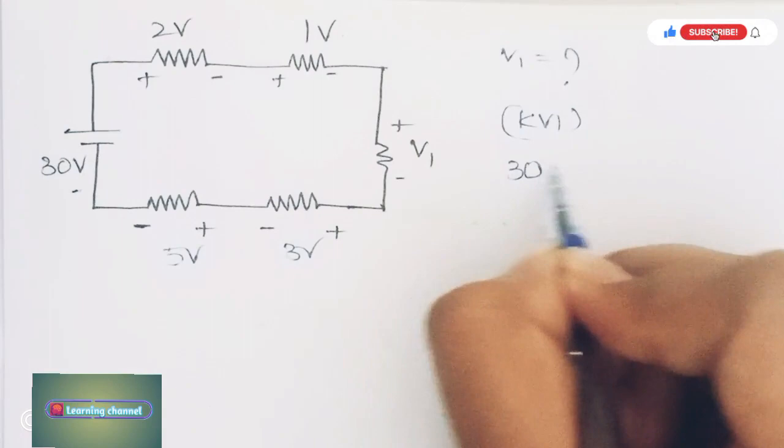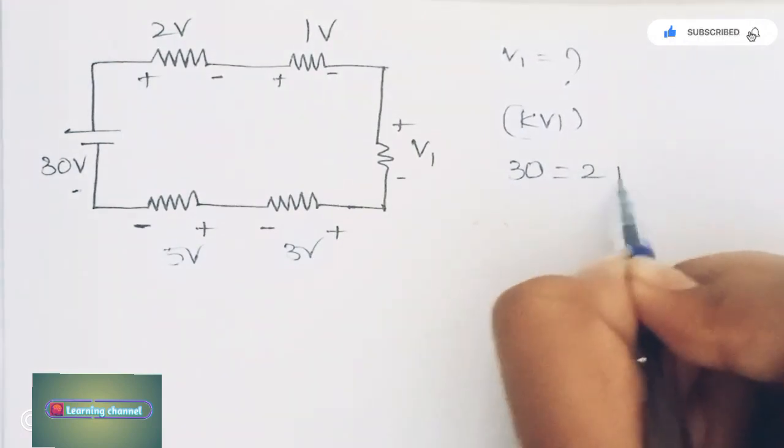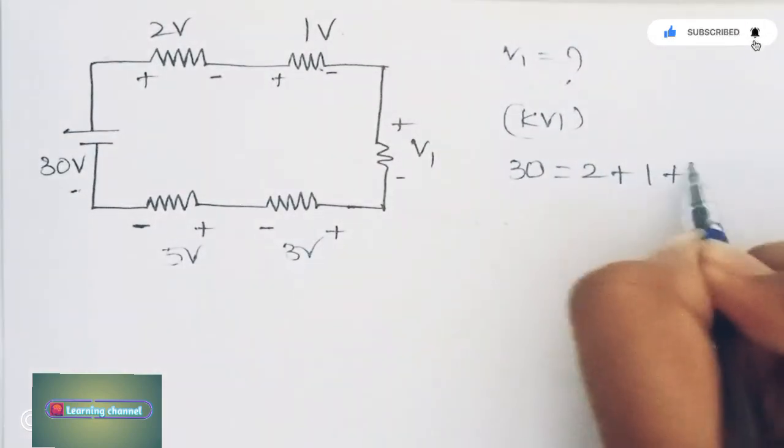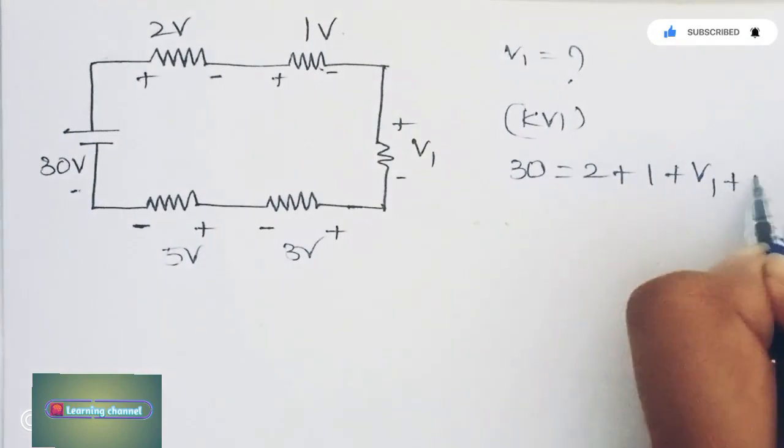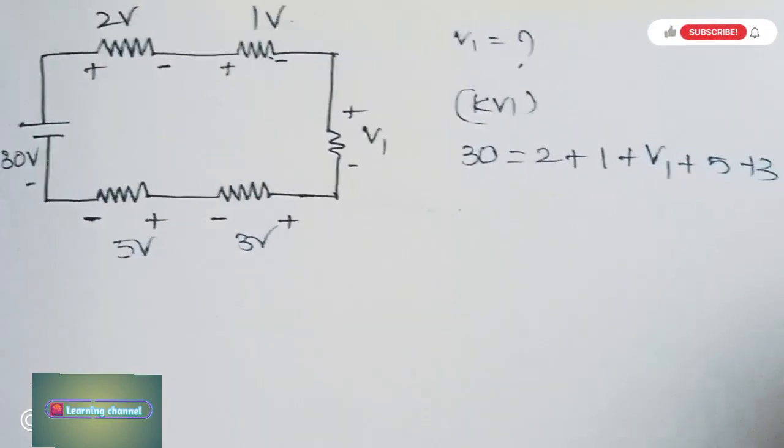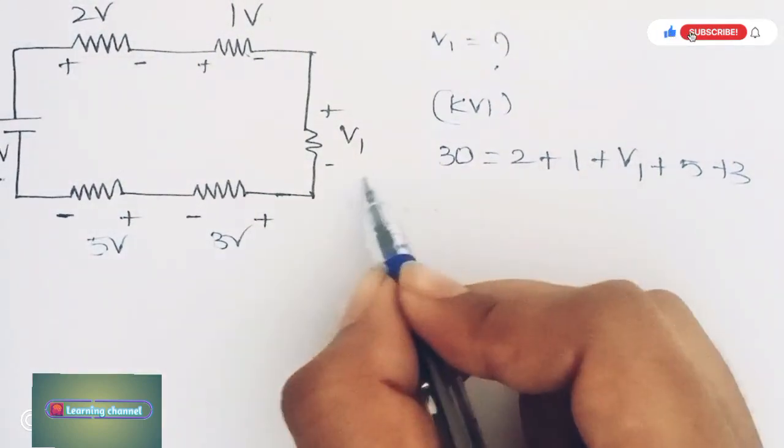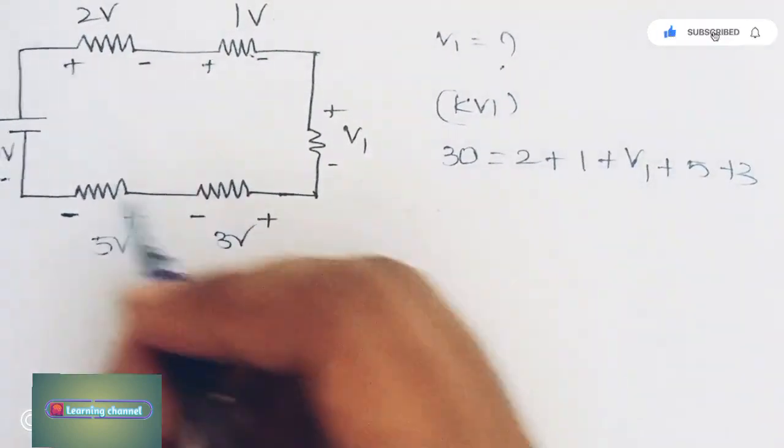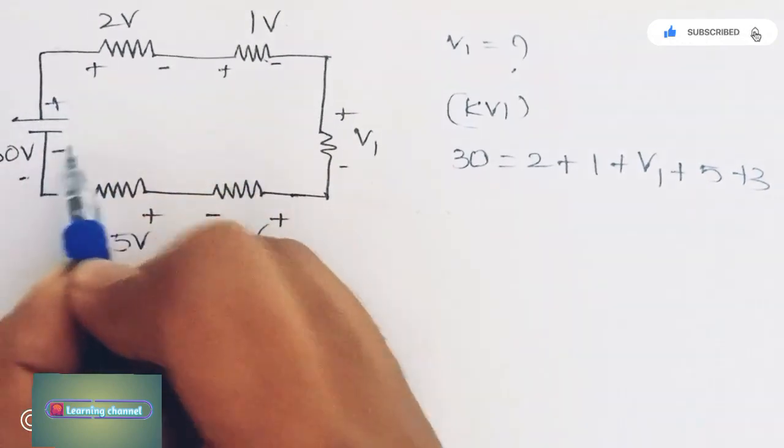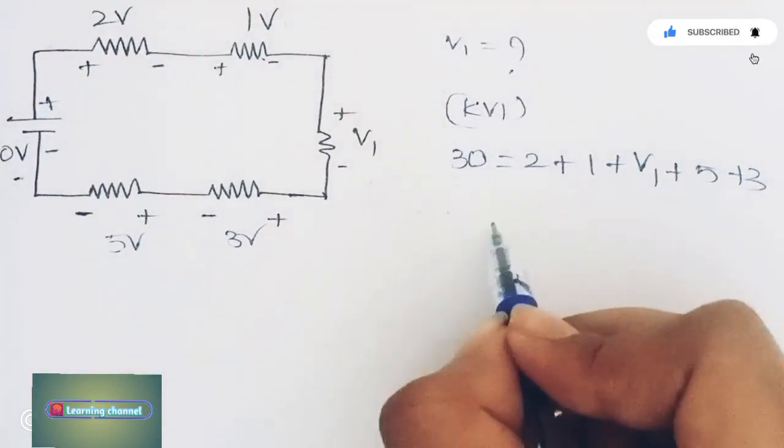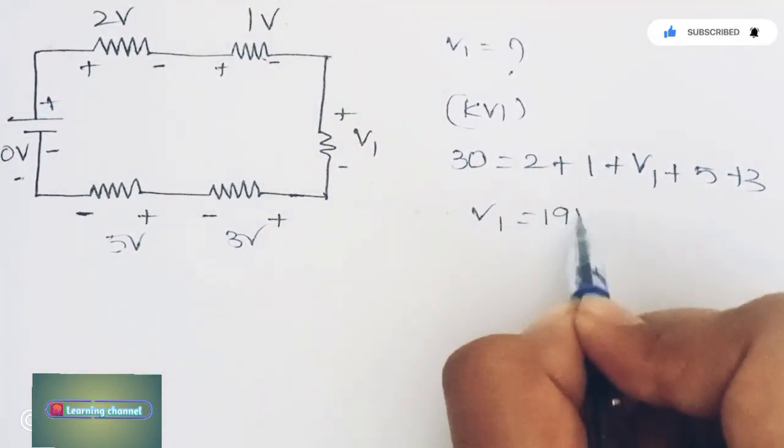By KVL, we can say that the battery voltage source is 30V. So 30 = 2 + 1 + V1 + 5 + 3. According to KVL, the sum of all voltages equals zero. Here we have plus and minus. From this, V1 = 19 volts.